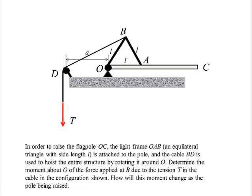In order to raise the flagpole OC, the light frame OAB is attached to the pole, and the cable BD is used to hoist the entire structure by rotating it around O.